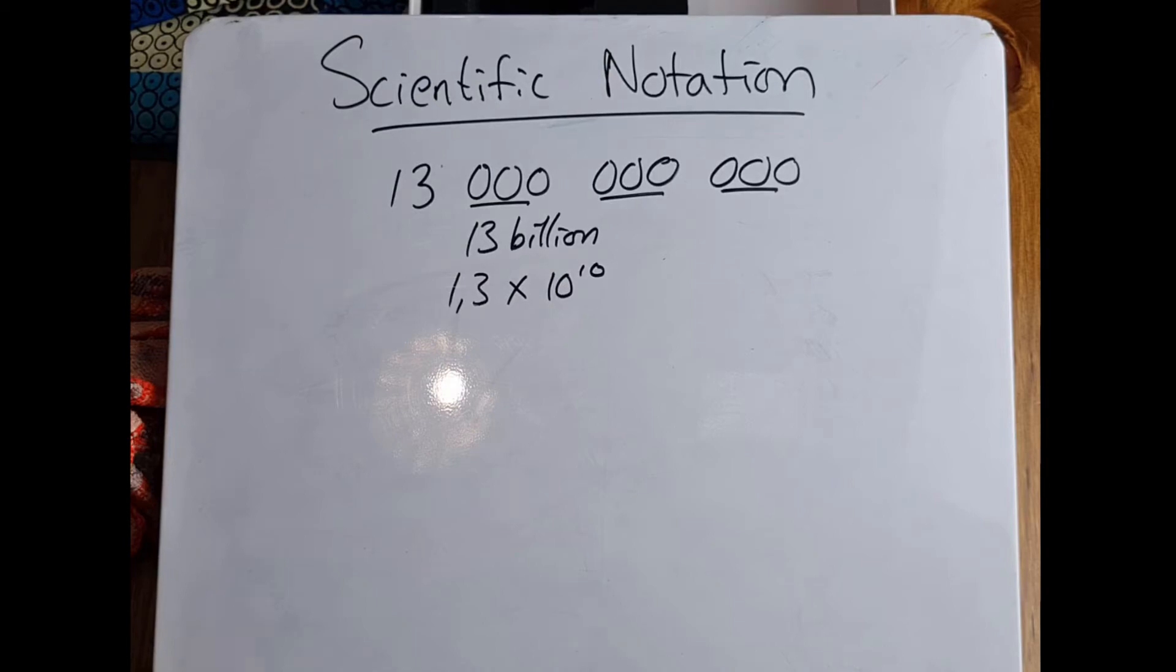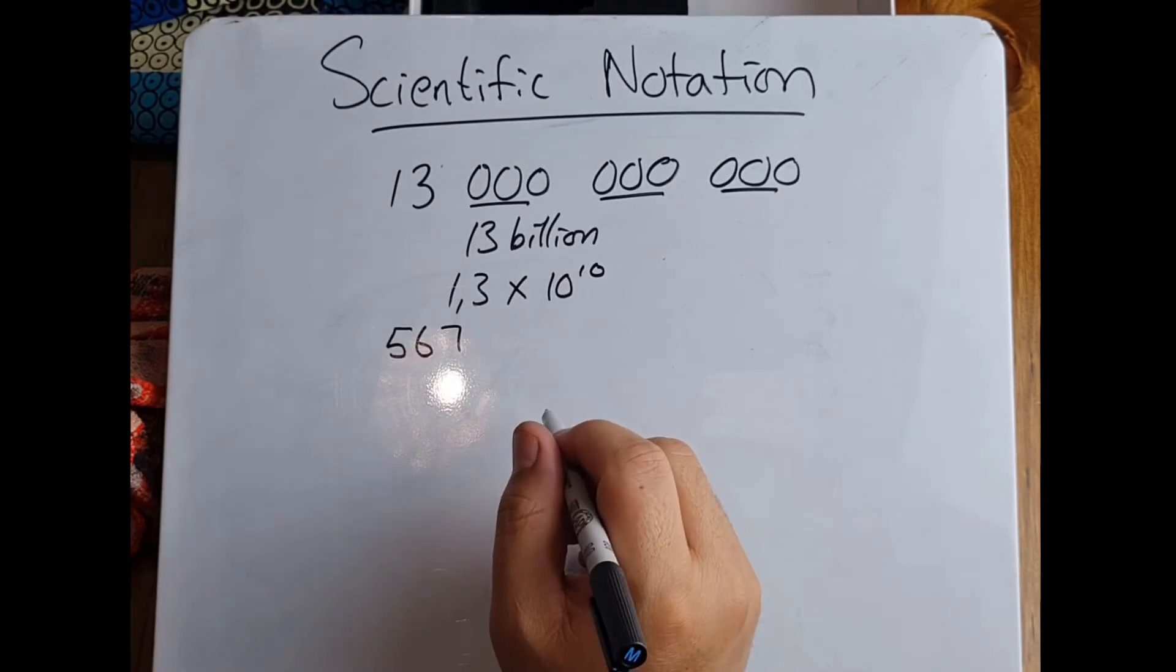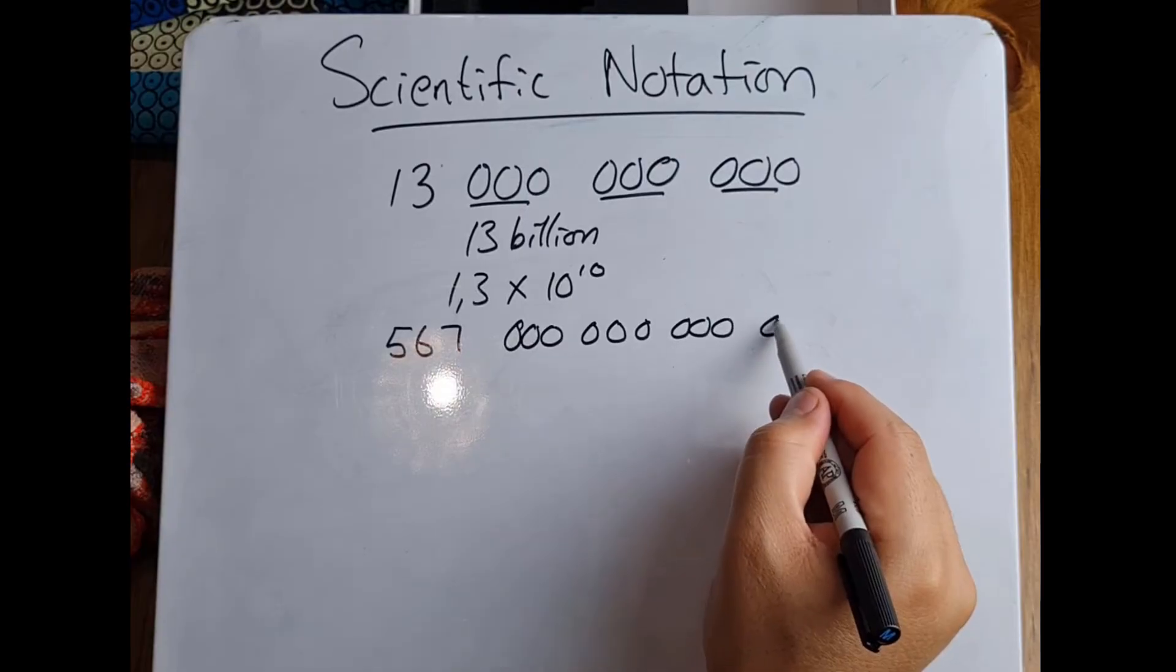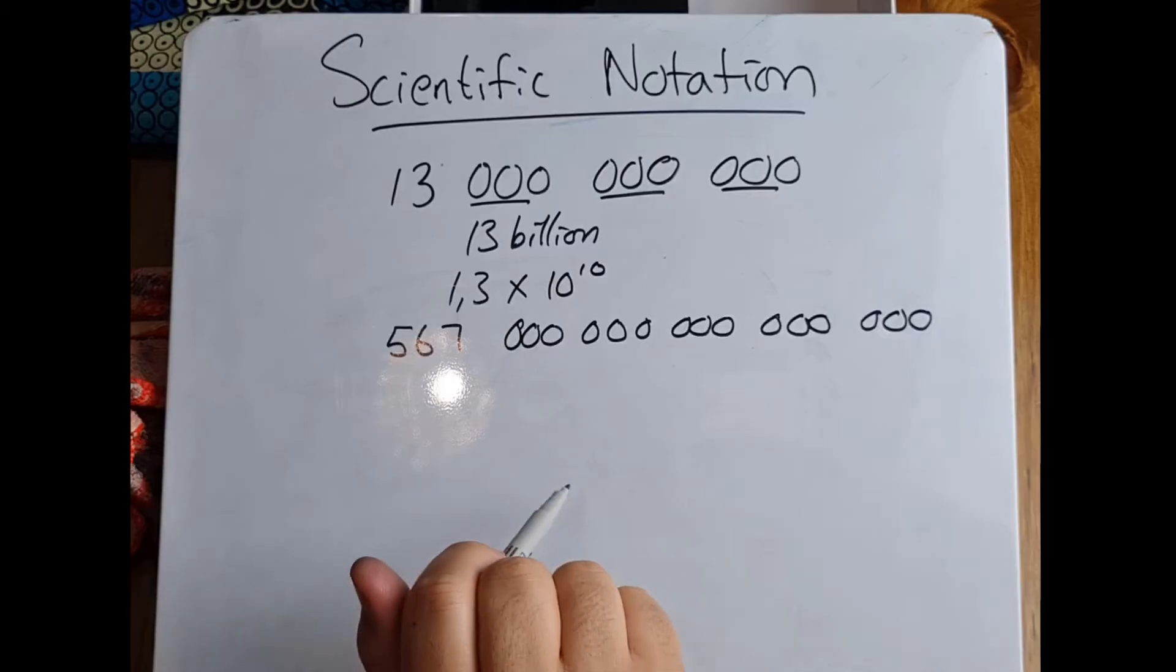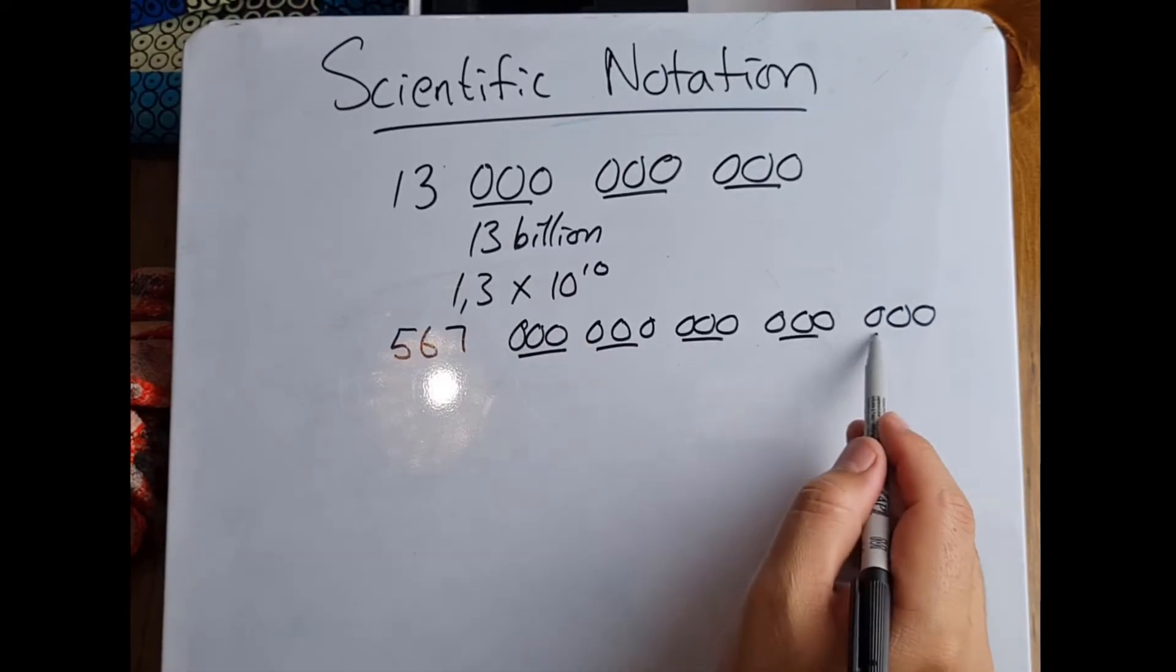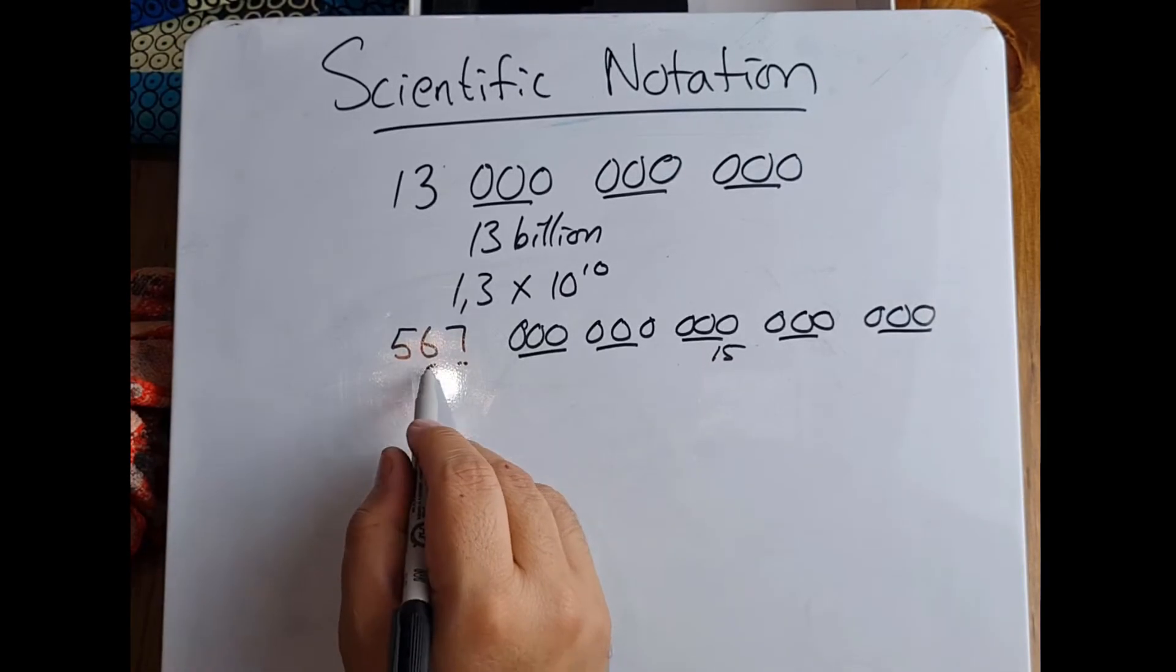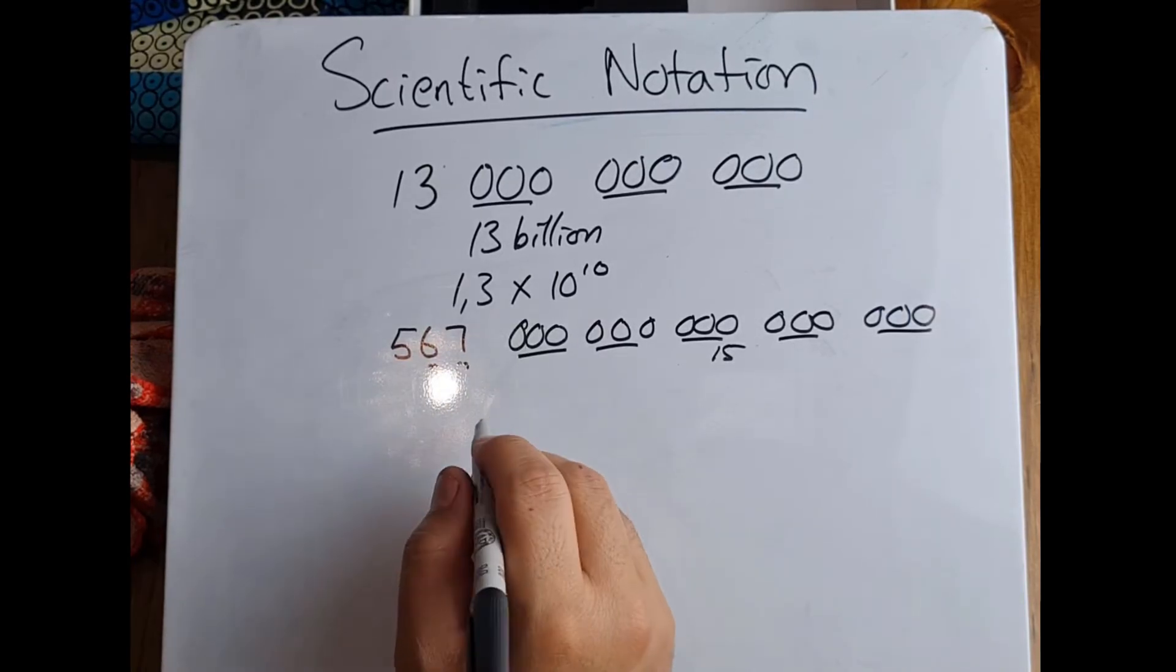Let's look at another one: 567 and let's go 1, 2, 3, 4, 5, 6, 8, 9, 10, 12, 13, 14, 15. Okay, that's 15 zeros we can see there. It's 15 zeros, but I've also got two spaces over here, or two numbers over here, so when I write that